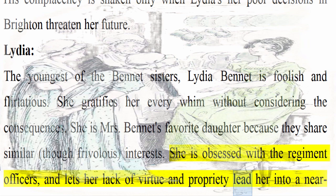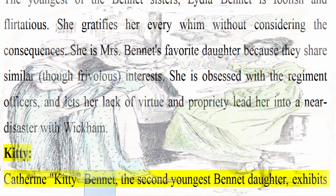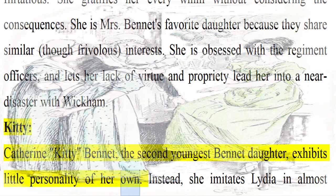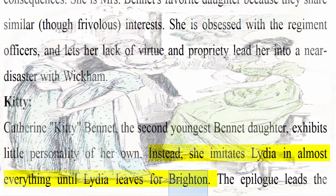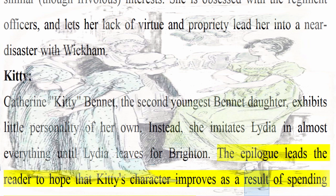Kitty: Catherine Kitty Bennet, the second youngest Bennet daughter, exhibits little personality of her own. Instead, she imitates Lydia in almost everything until Lydia leaves for Brighton. The epilogue leads the reader to hope that Kitty's character improves as a result of spending time with her elder sisters instead of Lydia.